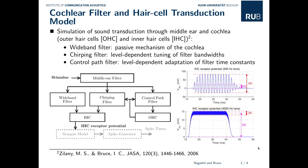An example of the modeled inner hair cell receptor potential can be seen on the right-hand side for a frequency of 500 Hz and a frequency of 4 kHz. While this model provides a good simulation of the auditory periphery, it has to be operated at a sampling rate of at least 100 kHz to eliminate aliasing effects caused by the model nonlinearities. This comes along with an increased computational complexity which prevents the application of the model in real-time scenarios.